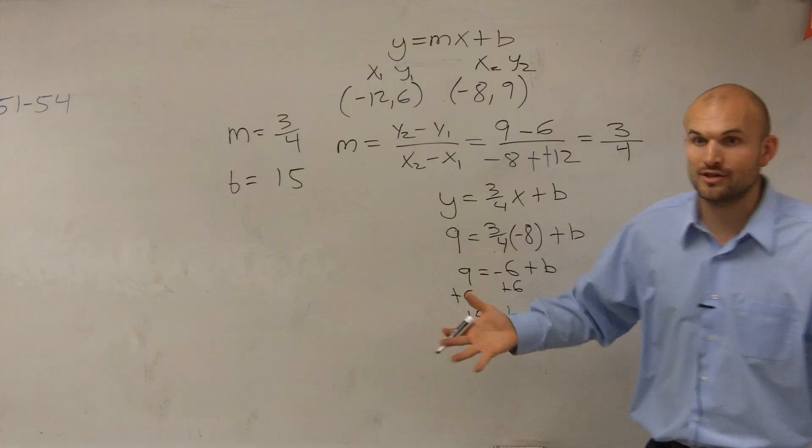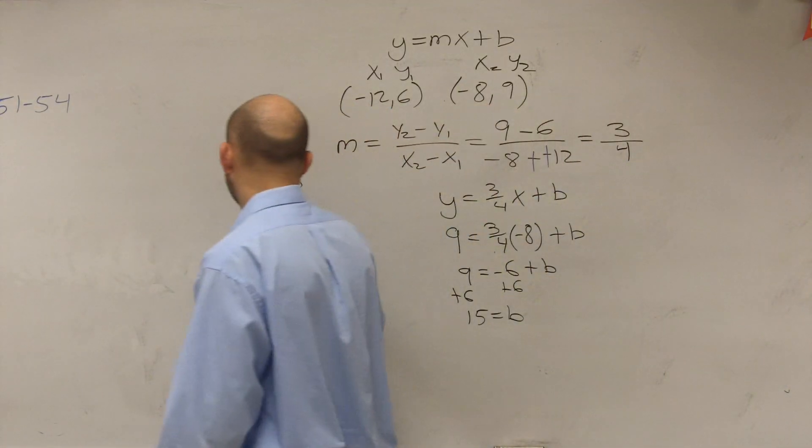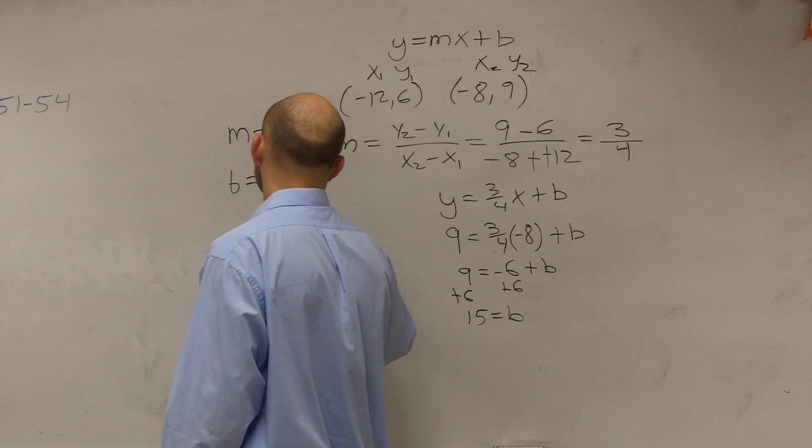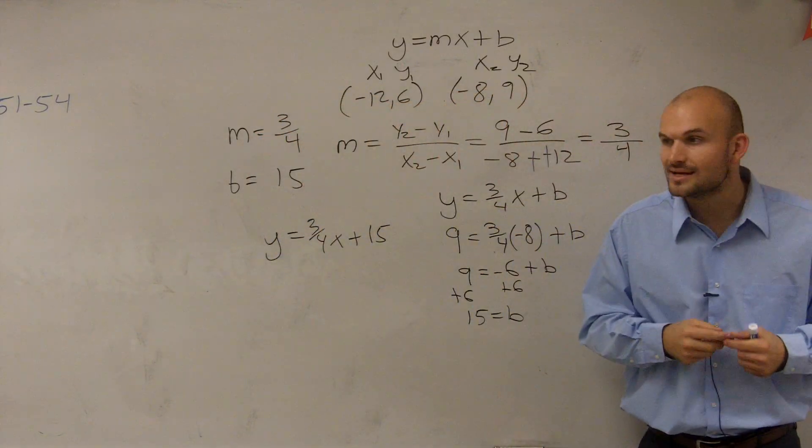So now, ladies and gentlemen, do we have all the information we need to write the equation of the line? Yes. So we write y equals 3 fourths x plus 15. Done. That's all you guys got to do.